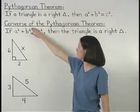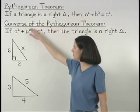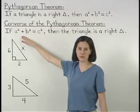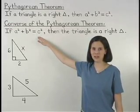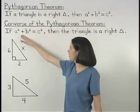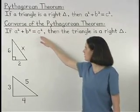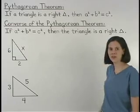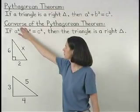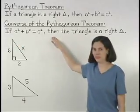The converse of the Pythagorean theorem, on the other hand, states that if the sum of the squares of two sides of a triangle is equal to the square of a third side, or a squared plus b squared equals c squared, then the triangle is a right triangle. Remember that the converse switches the order of the if and then statements.